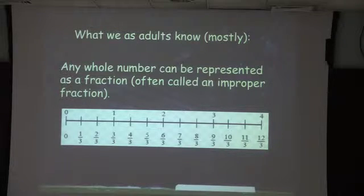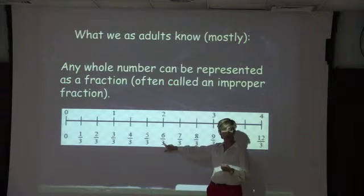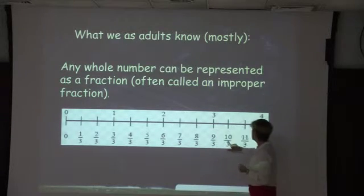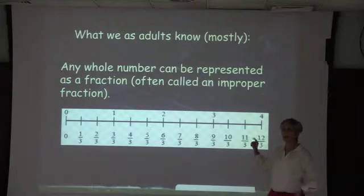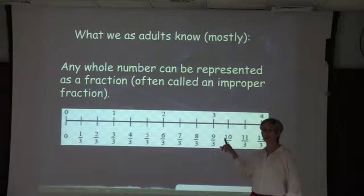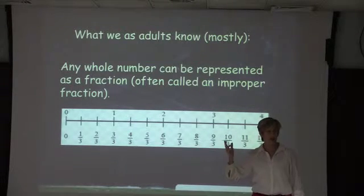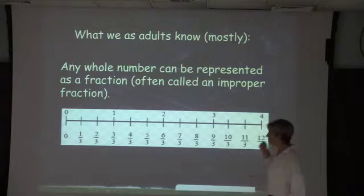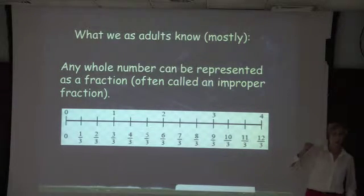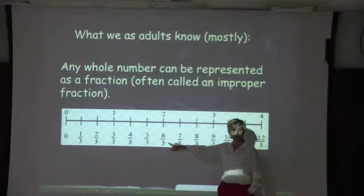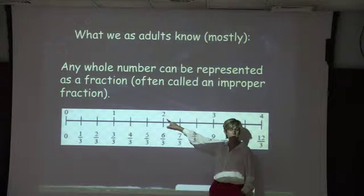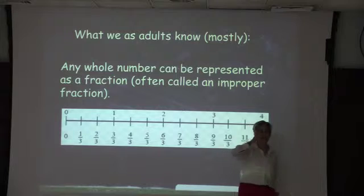Any whole number can be represented as a fraction. We will be using number lines that count up and keep going to different ones. Kids are learning this by building it, by using strips, and by using a number line. We are not doing any multiplying or dividing to get them there. Kids with good numeracy will start seeing this is three-thirds plus three-thirds — two groups of three-thirds — but we never turn it into an algorithm involving multiplication.